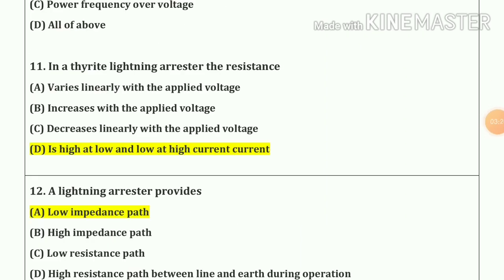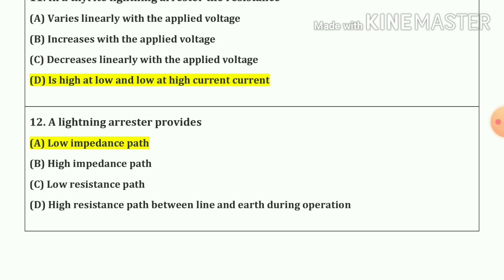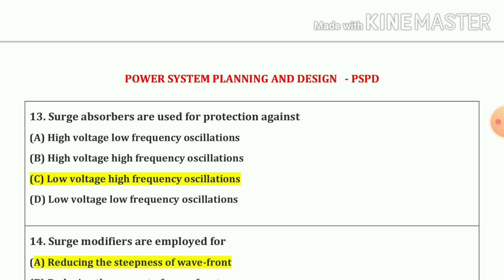Question number 11. In a lightning arrester the resistance is high at low current and low at high current. Question number 12. A lightning arrester provides a low impedance path. Question number 13. Surge absorbers are used for protection against low voltage high frequency oscillations. Our answer is option C.